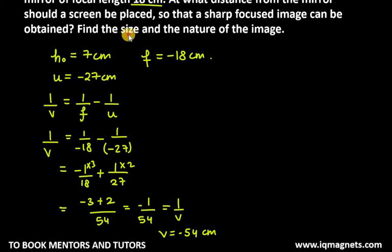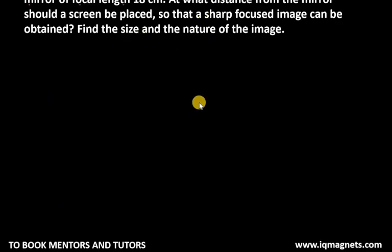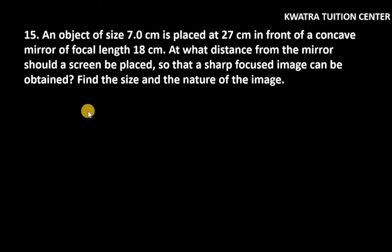Now here we have to find size. We have to find nature. We will start with size. How do we find size? HI over H0 equals V over U. Here HI is unknown. H0 is given as 7 equals V is minus 54.